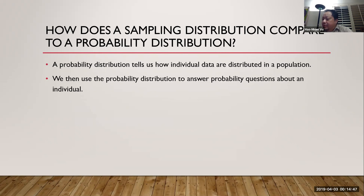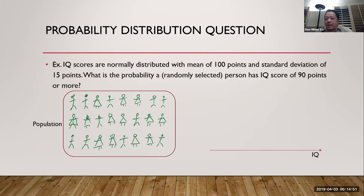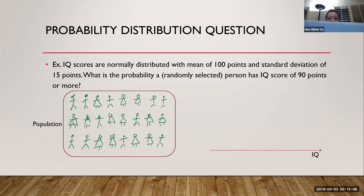Here's another common example of a probability distribution. IQ scores are normally distributed with a mean of 100 points and standard deviation of 15 points. What is the probability that a randomly selected person has an IQ score of 90 points or more?